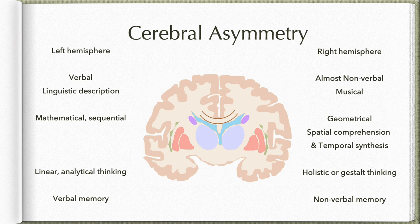Whereas the right hemisphere is more involved in holistic and gestalt thinking. Holistic, in the sense — using the same example — we know that if each one of us goes out without a mask, soon the entire country or entire world will be full of people affected by COVID. So we are using small information together and thinking on a larger scale. That is done by the right hemisphere.